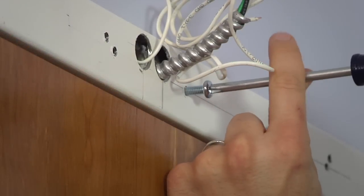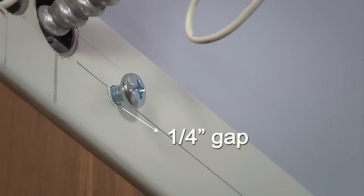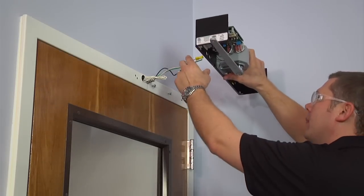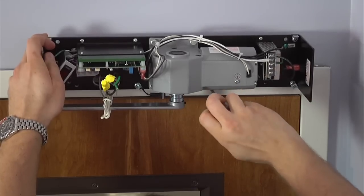Next, start the screws in the two center holes, leaving at least a quarter inch gap. Then slide the operator onto these screws. Insert and tighten all remaining screws.